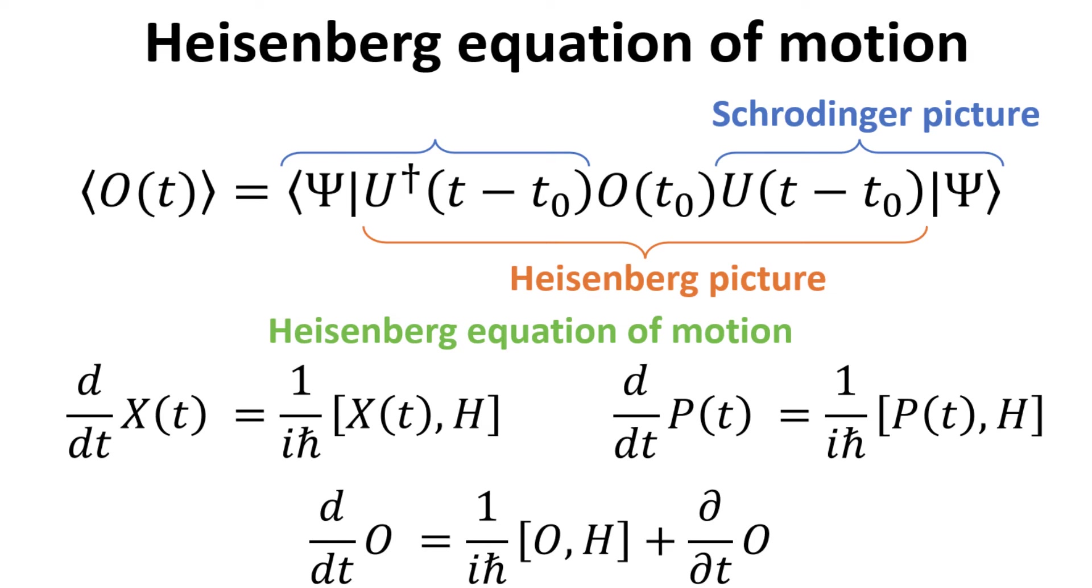In this video, we introduce the Heisenberg picture and contrast it with the Schrödinger picture, and formally derive the Heisenberg equation of motion for the position, momentum, and general operators.